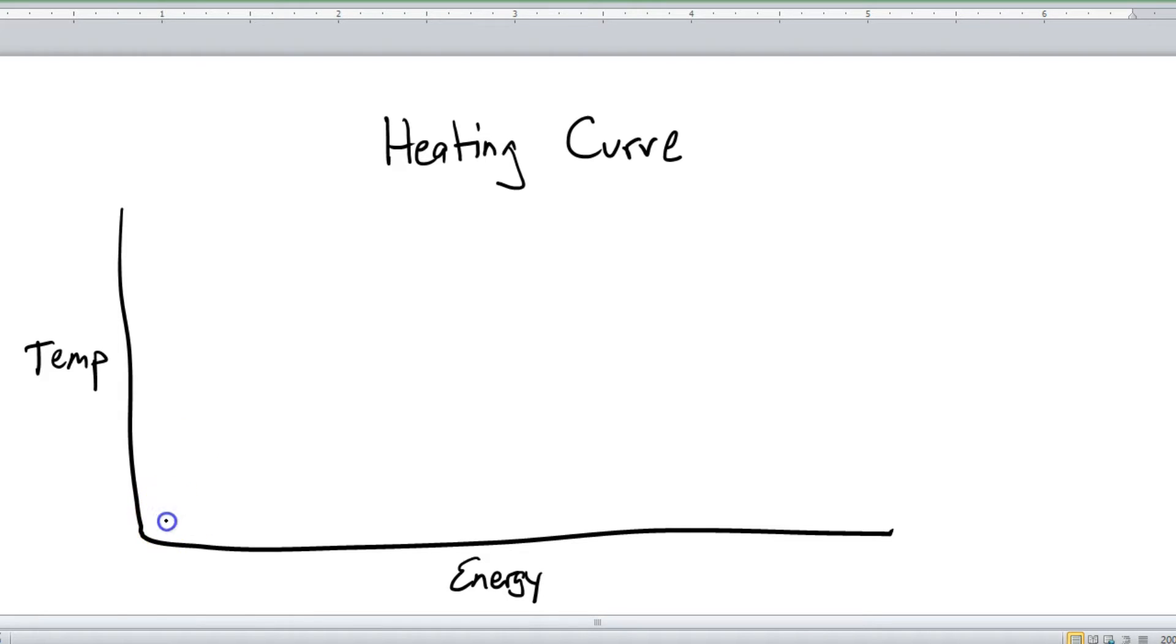So here we go. Down here in the corner we're going to start with a little diagonal section like so. It will flatten out like this. We have another diagonal section going up, another flat section, and last but not least, a third diagonal section. So this is the shape of the heating curve.